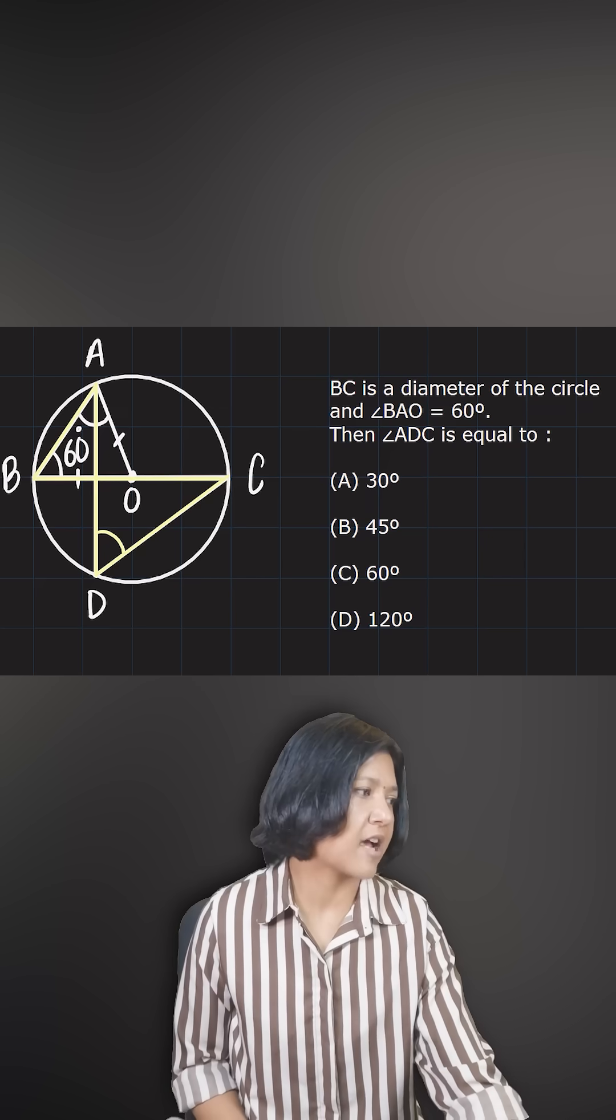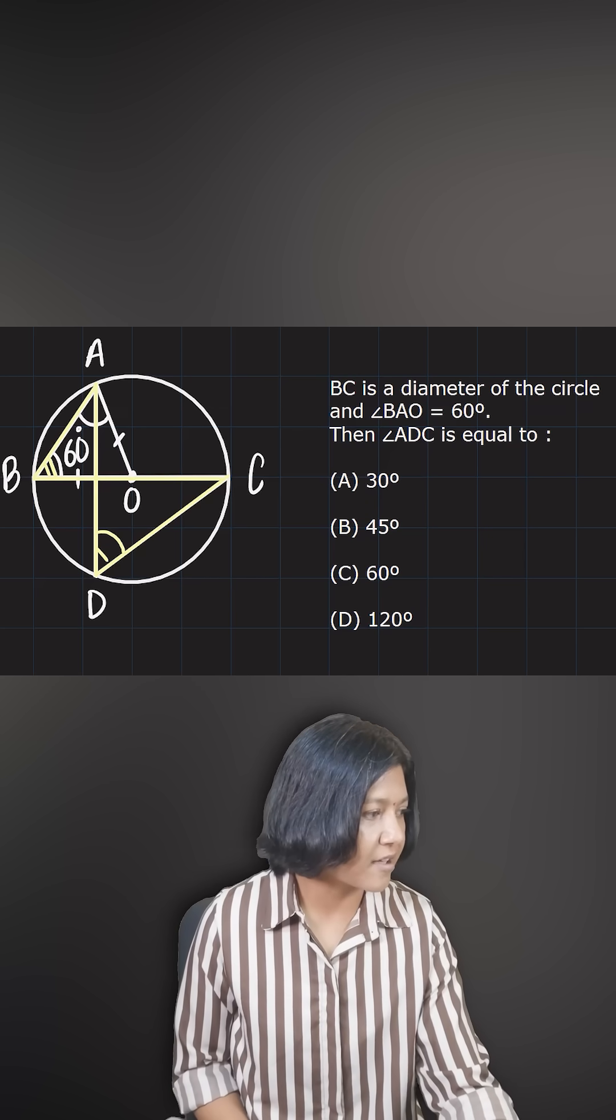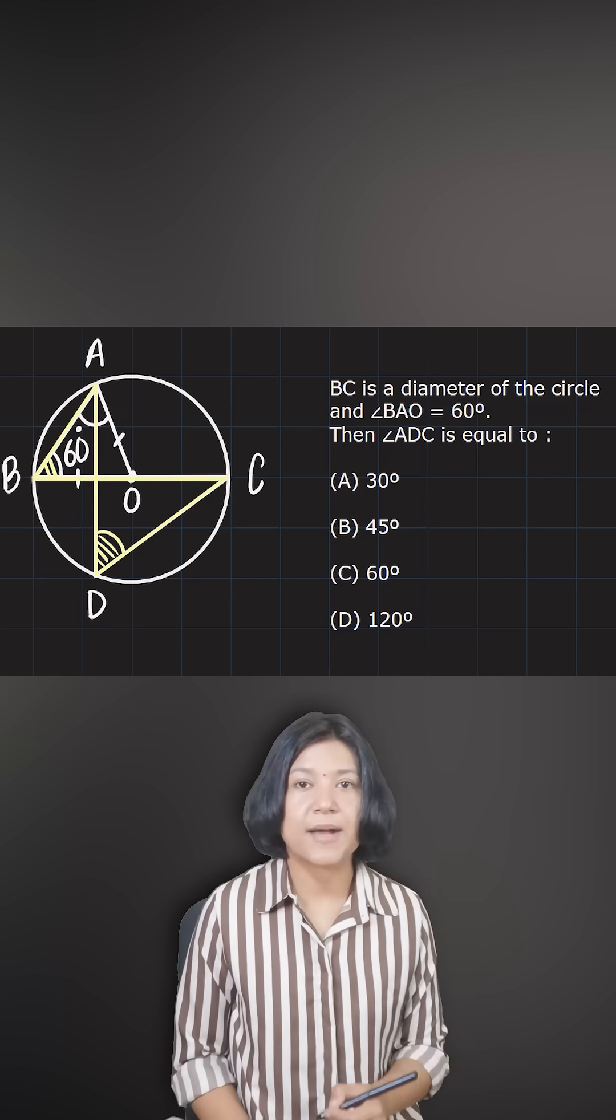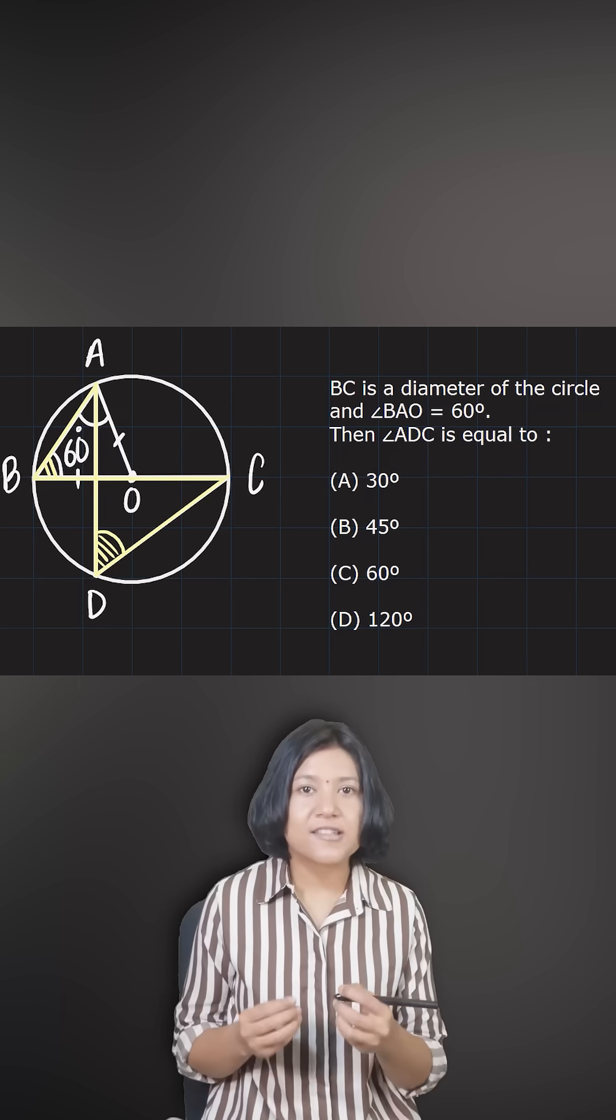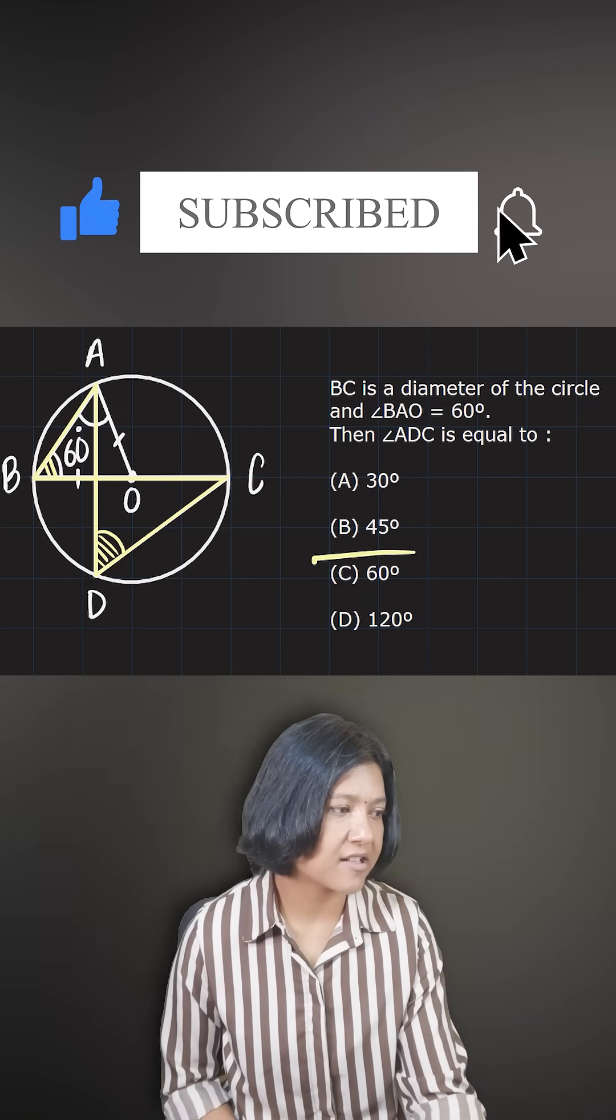The same arc AC has now subtended an angle 60 degrees here. So it will subtend 60 degrees here as well. It comes from the property of angles in the same segment are always equal.